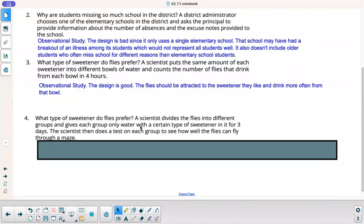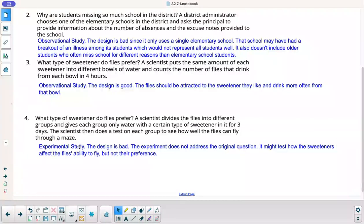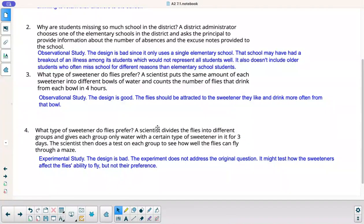What type of sweetener do flies prefer? Scientists divides the flies into different groups and gives each group only water with a certain type of sweetener in it for three days. Scientists then does a test on each group to see how well the flies can fly through a maze. This is an experimental study because they're doing an experiment. This is a bad design, though. It doesn't really answer the original question. It's more so testing how the sweeteners affect the flies' ability to fly. It doesn't necessarily choose what's their preference. It's giving them a specific type of sweetener. It's not letting them choose the one that they prefer. So this would be a very bad study for that question.